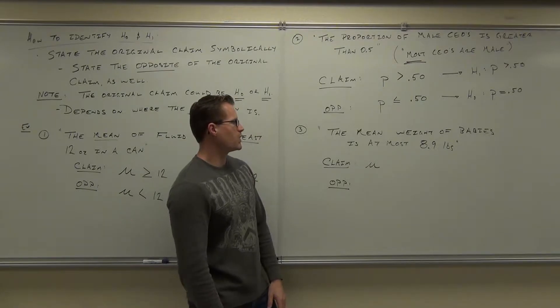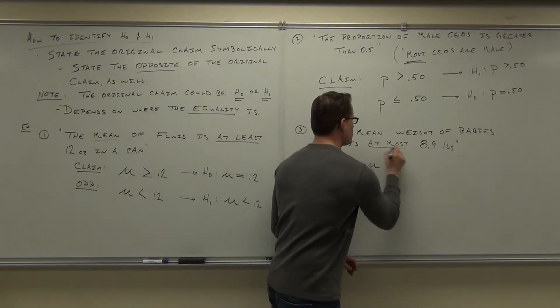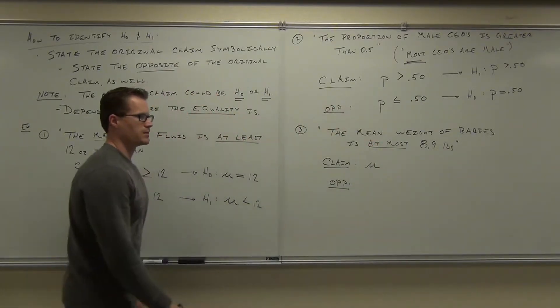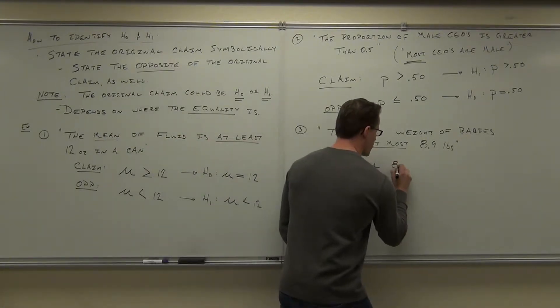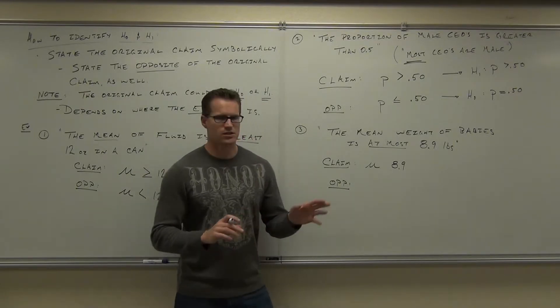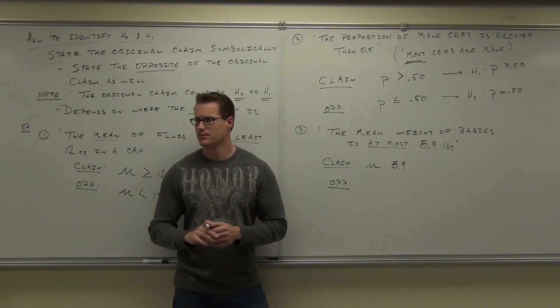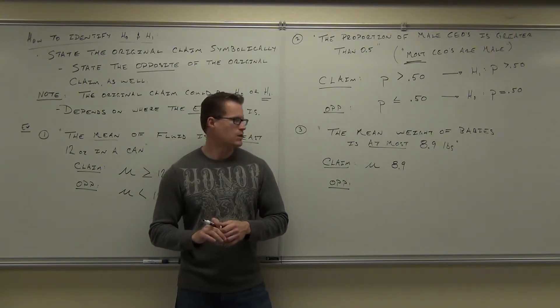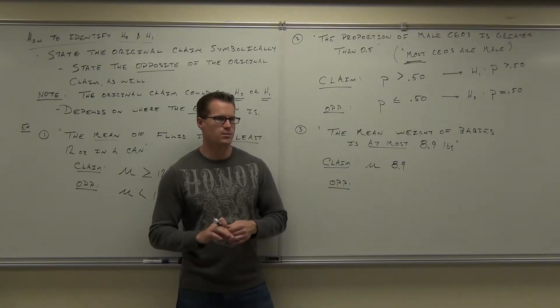Now, the mean weight of babies is at most 8.9 pounds. So I know I'm going to have a mean. I know I'm going to have 8.9. You just need to know whether it's equal to, greater than or equal to, less than or equal to, greater than or less than. What is it? At most, 8.9 pounds. At most.